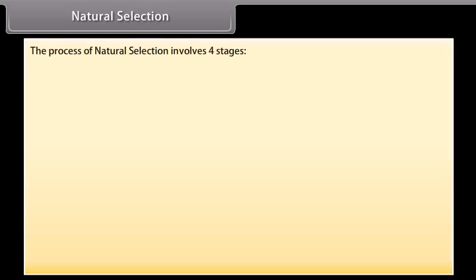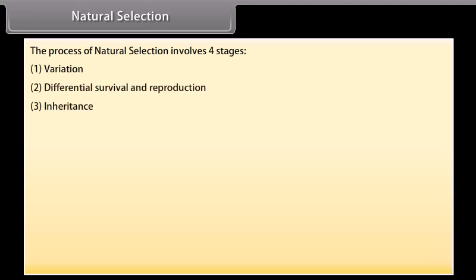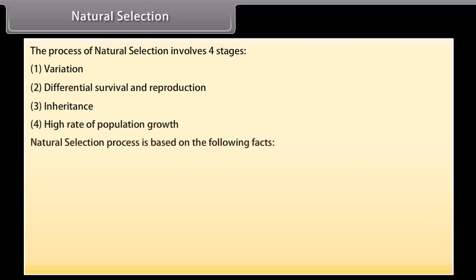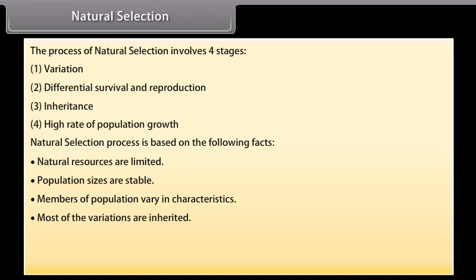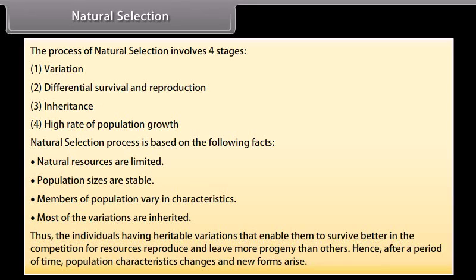The process of natural selection involves four stages: variation, differential survival and reproduction, inheritance, and high rate of population growth. Natural selection is based on the facts that natural resources are limited, population sizes are stable, and members of a population vary in inherited characteristics. Thus, individuals with heritable variations that enable better survival reproduce more, and after a period of time population characteristics change and new forms arise.